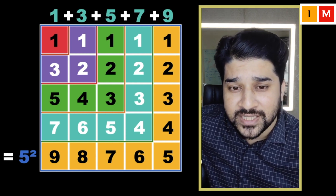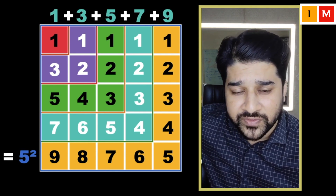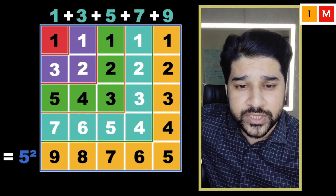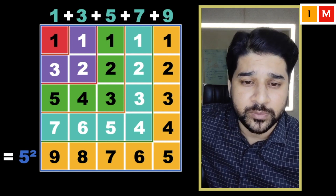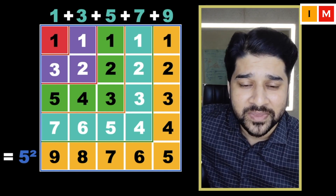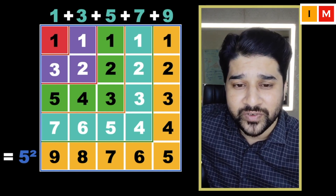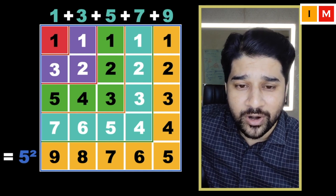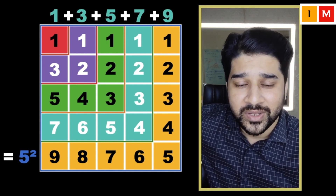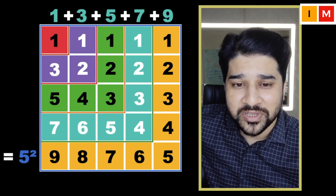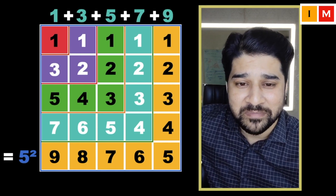And 1 plus 3 plus 5 plus 7 equals 4 squared, which means the sum of the first 4 odd numbers is 4 squared. So if someone asks you what is the sum of the first 100 odd numbers, you're going to call it 100 squared. And if someone asks what's the sum of the first n odd numbers, you're going to call it n squared. See you in the next video with more such amazing patterns!